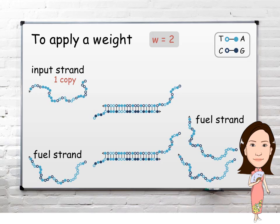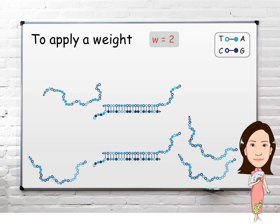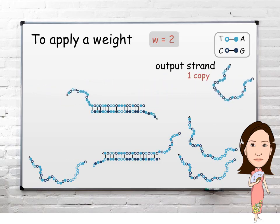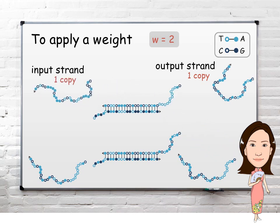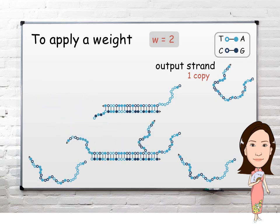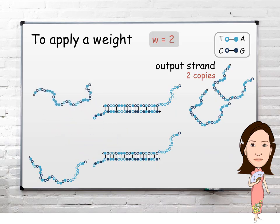To apply a weight of 2, we start with one copy of the input strand and some extra strands called fuel. The input strand first produces one copy of the output strand, then a fuel strand replaces the input strand in a symmetric reaction. Now the input strand can trigger the release of another output strand, and become available again with the help of another fuel strand. At this point, there are no double-stranded molecules containing the output strand anymore, so no more output strand can be produced, which indicates that a weight of 2 has been applied to the input.